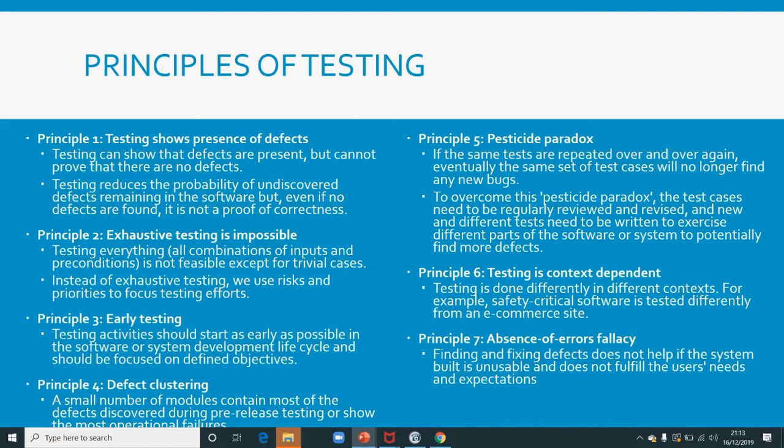You cannot actually say there are no defects. Testing will show that you've found 20 bugs, one bug, two or three bugs, or you can sign it off saying there's no bug — but that is not totally right. The principle of testing says that testing shows the presence of bugs. It doesn't show there are no bugs, because there might be bugs it did not discover. However, you have been able to reduce the probability of defects remaining in the software.